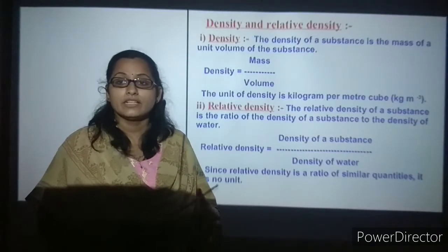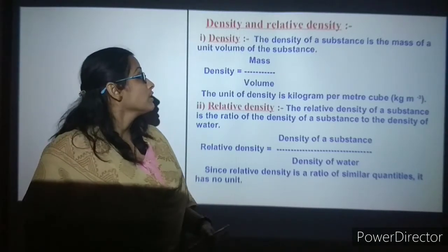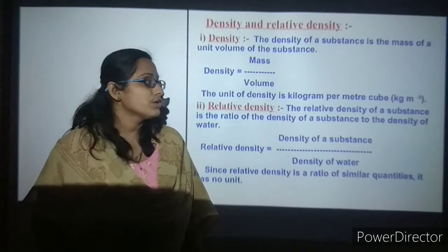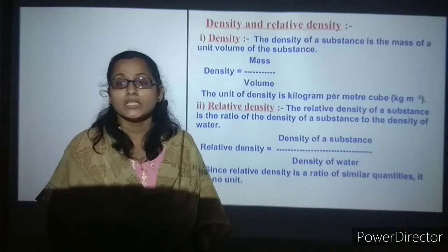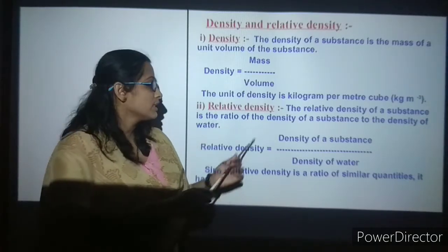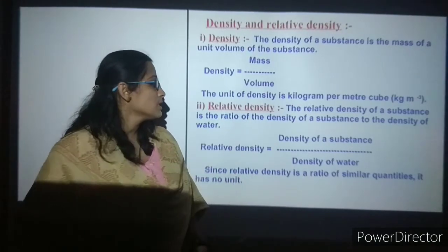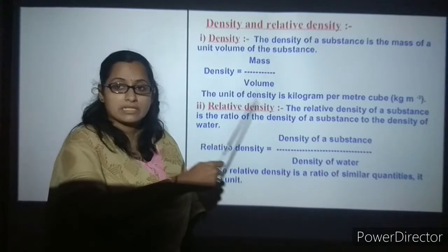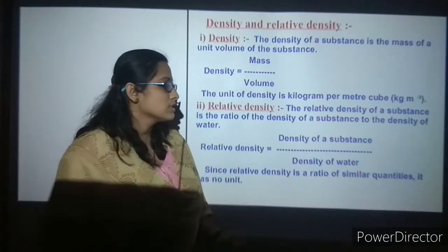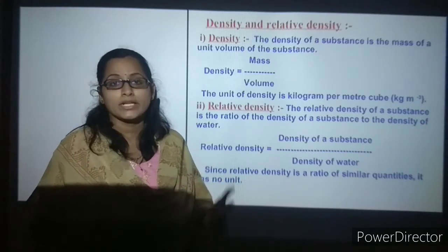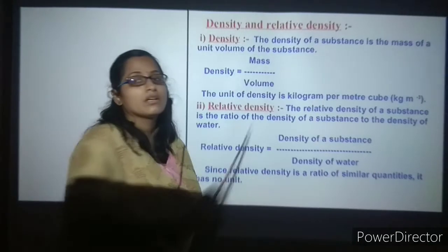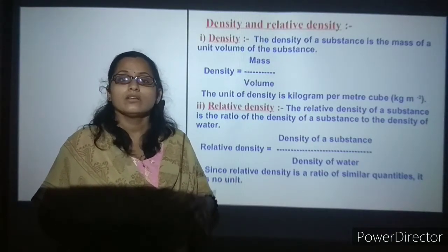Density and relative density: what is density? It is the mass of unit volume of any substance. Density equals mass divided by volume. The unit of density is kilogram per meter cubed. Relative density of any substance is the ratio of the density of a substance to the density of water. Since it is a ratio of similar quantities, relative density has no unit. That's all about this topic — thank you all for watching.